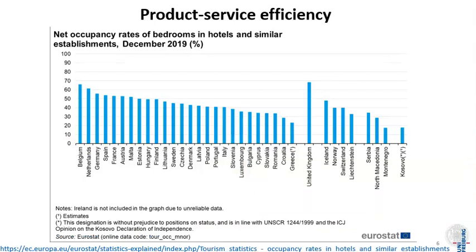Buildings have similar issues regarding product-service efficiency. Here we see the net occupancy rate of bedrooms in hotels. Most of the countries shown have occupancy rates below 50%, meaning hotel rooms are empty more than half of the time. That is sometimes unavoidable for seasonal hotels, but it also points to an efficiency problem — we have a lot of built-up environment that is not used all of the time.